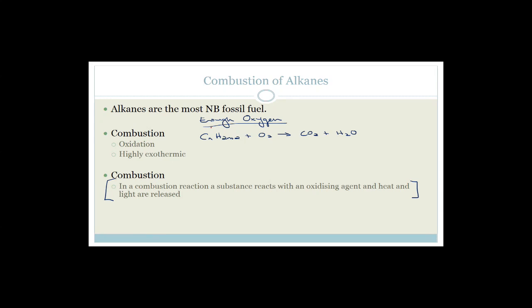If there is not enough oxygen — a deficiency of oxygen — the alkane plus oxygen forms carbon monoxide and water instead. They love asking: which gas forms with excess oxygen? Carbon dioxide. With a deficiency of oxygen? Carbon monoxide. Now let me go through the balancing — many matrics struggle with this and it's important because they love asking it.